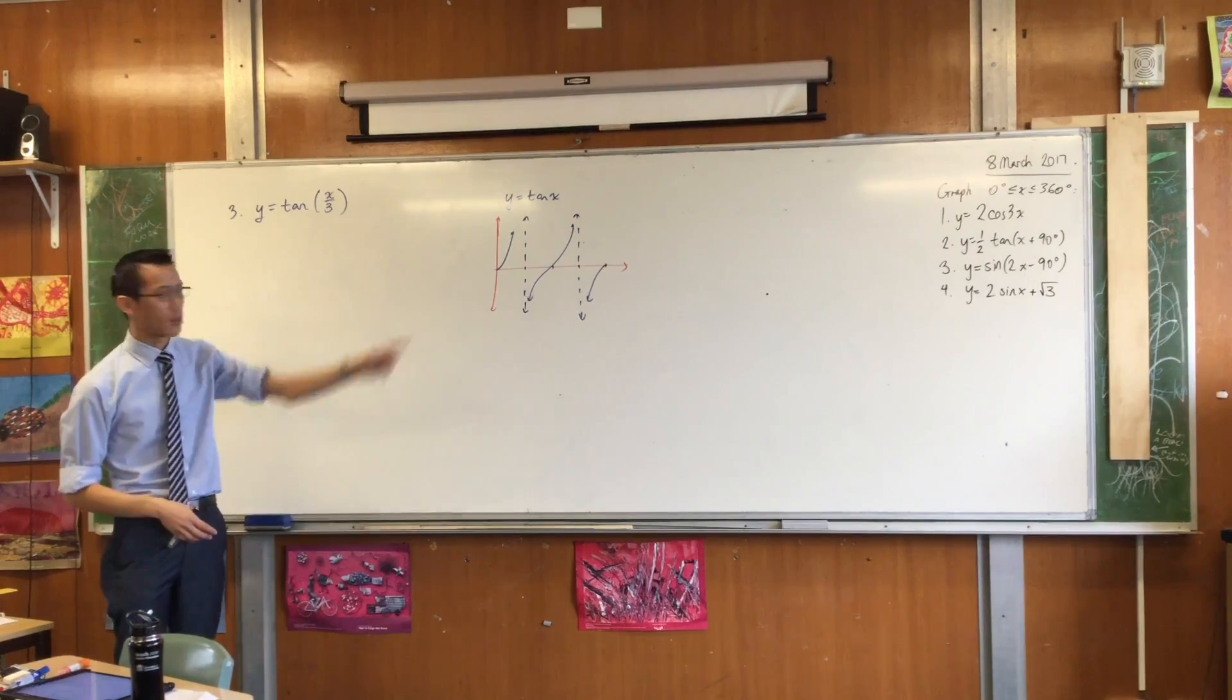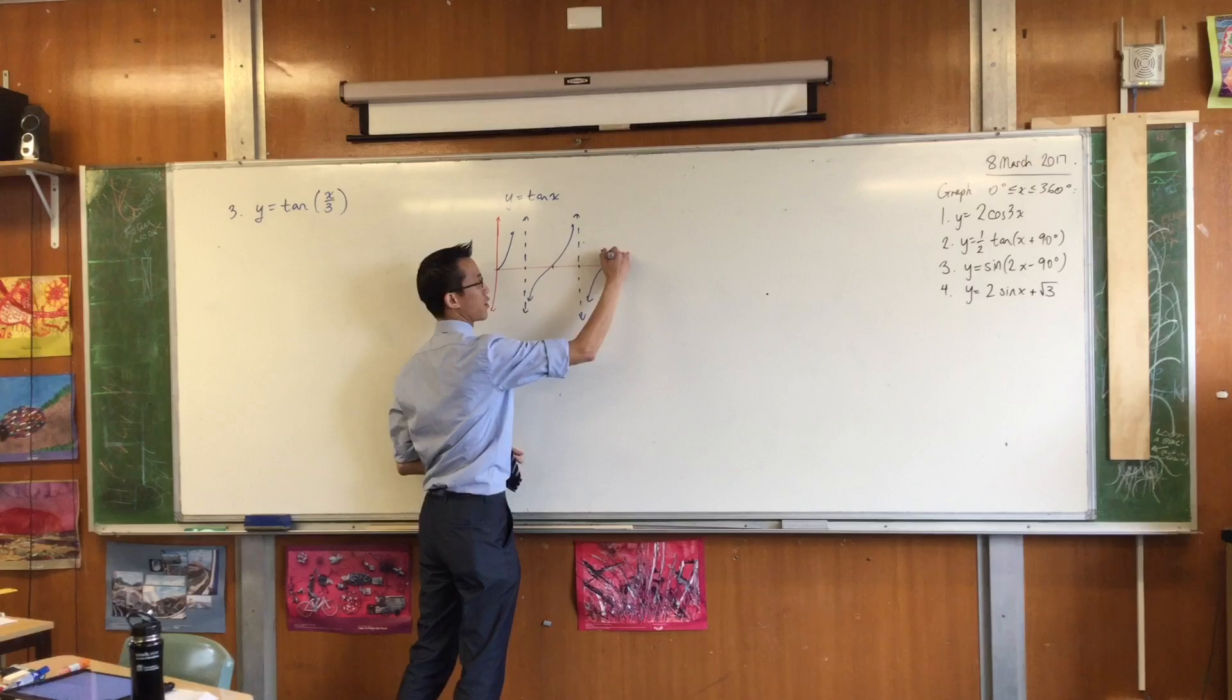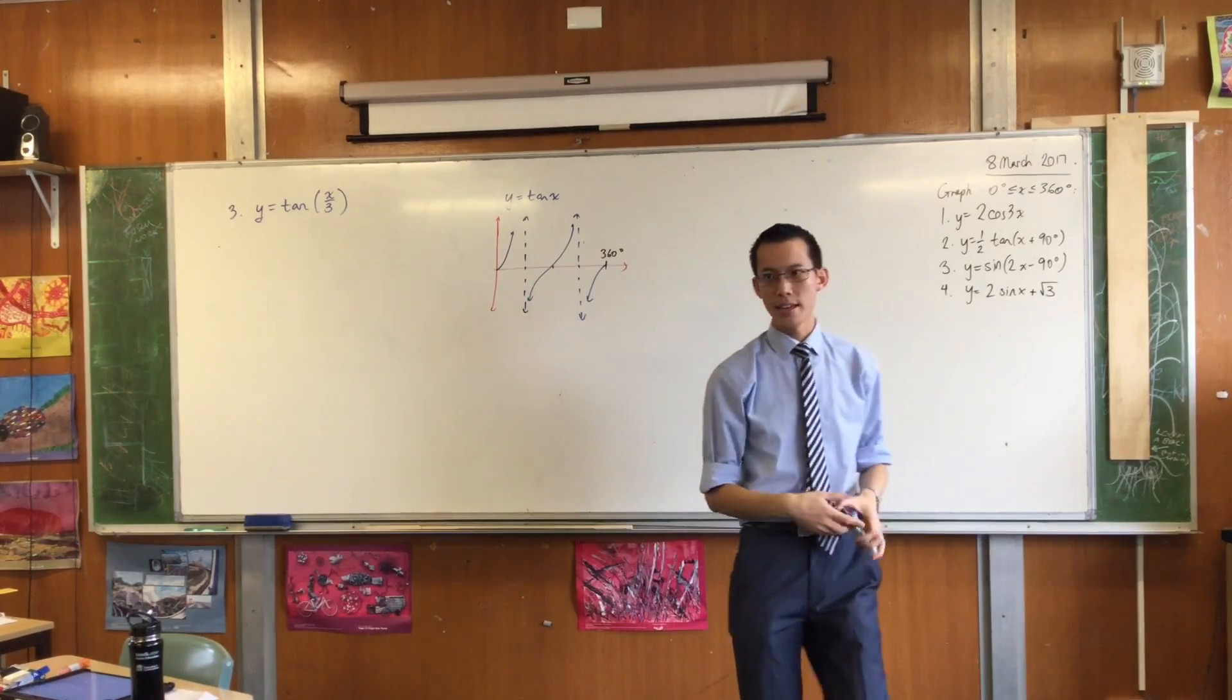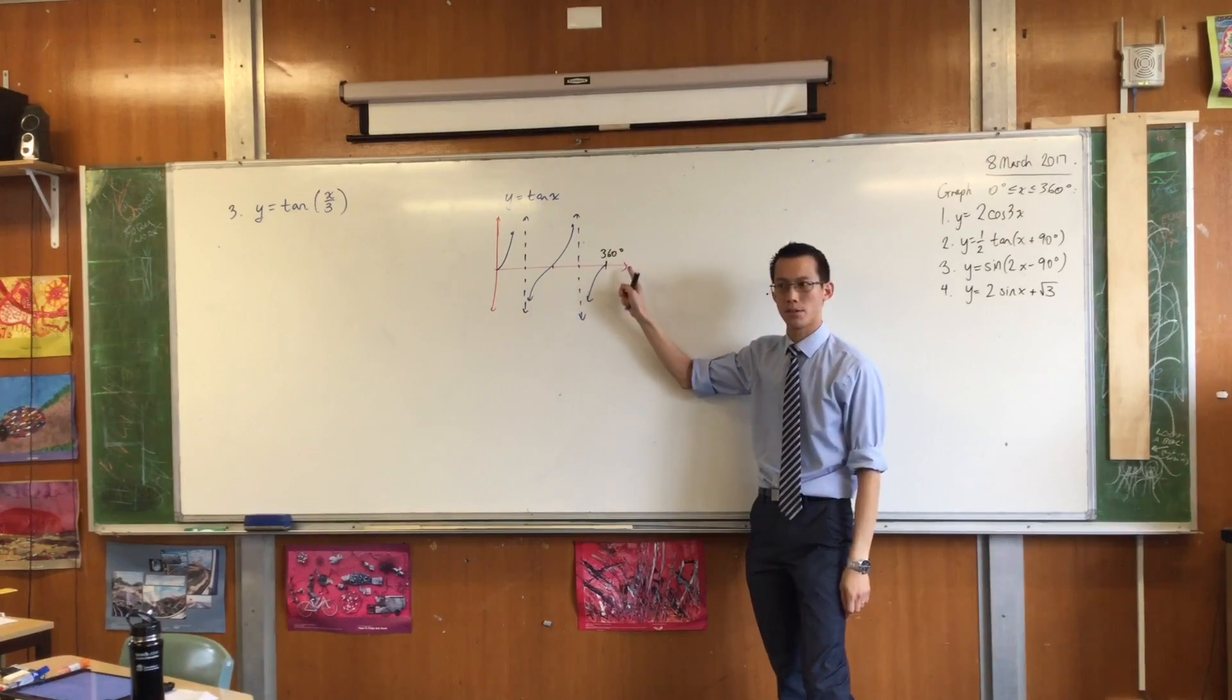So here's regular tan x. I have drawn it from 0 to 360, like so. Tan x is a little bit different from sine and cosine in that its period is not 360 degrees. What is the period of tan?